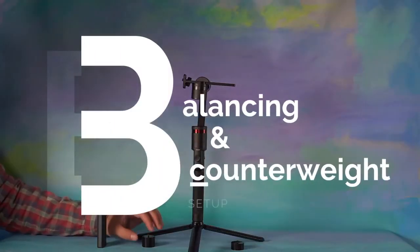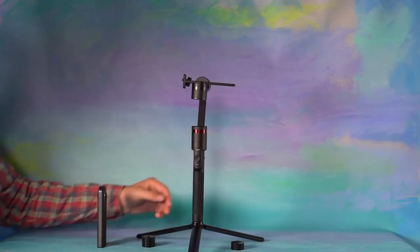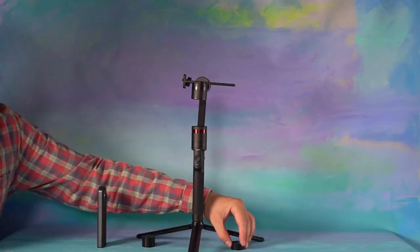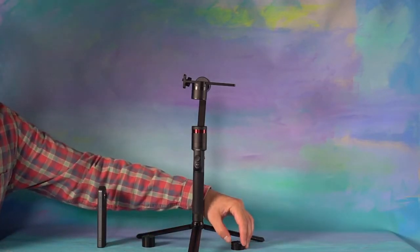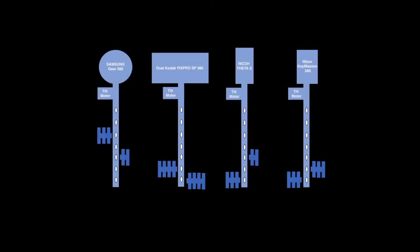Balancing and counterweight setup. To balance the theta, first mount the stabilizer to a tripod or ask a friend for a helping hand. First refer to the counterweight diagram before balancing your camera.